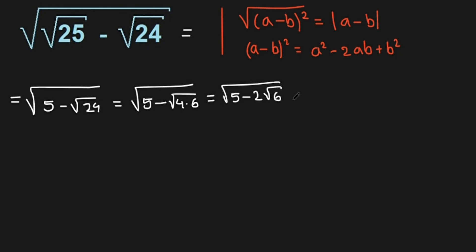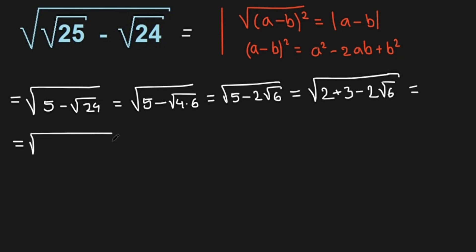Now let's simplify a bit more. We have the square root of 5, which can be written as 2 plus 3, minus 2 times the square root of 6. This equals the square root of 2 minus 2 times the square root of 6, which can be written as the square root of 2 times 3.